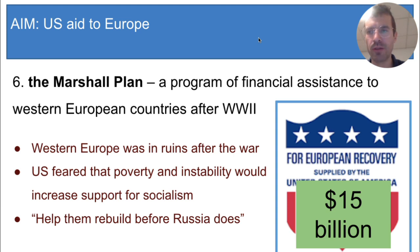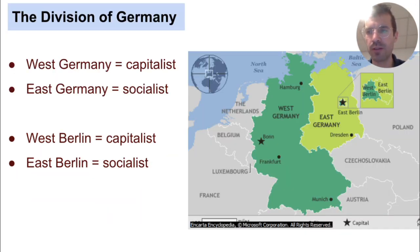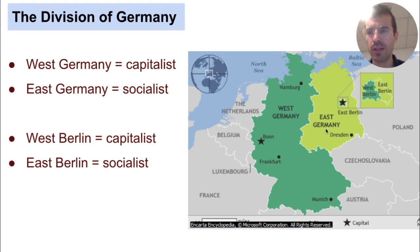Now let's look at another way the U.S. tried to spread capitalism in Europe: the Berlin airlift. Before you can understand this event, you need to know how Germany was divided during the Cold War. After World War II, the Allies divided Germany. The western half was controlled by the U.S. and became capitalist, while the eastern half was controlled by the Soviet Union and became socialist. So Germany was two separate countries: West Germany and East Germany.